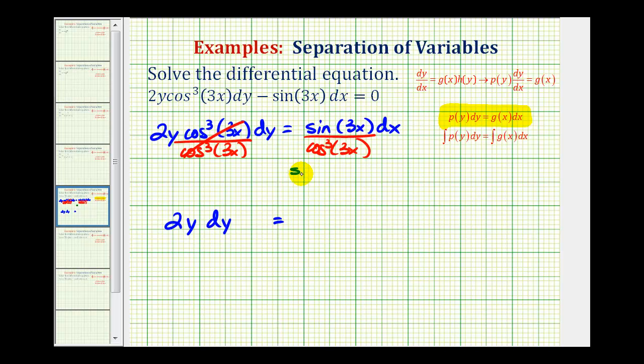And since sine theta divided by cosine theta is equal to tangent theta, we could rewrite this as sine 3x divided by cosine 3x times 1 over cosine squared 3x. In this form, we should be able to recognize that this would just be tangent 3x.